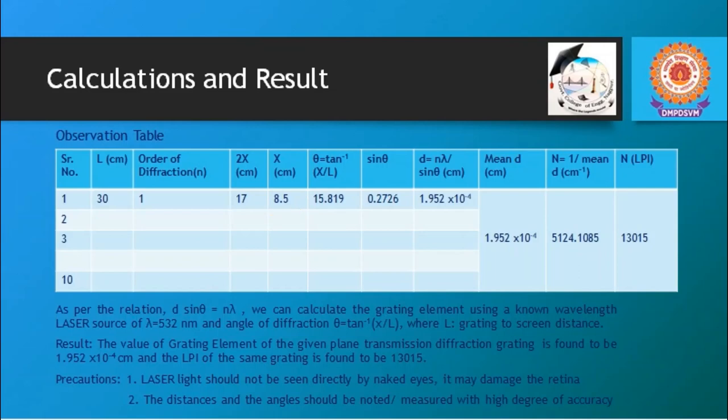By knowing the values of x and l we should calculate the tan inverse of x by l which is nothing but the angle of diffraction. That comes out to be 15.819 and hence sin θ is 0.2726. The basic relation tells us that d equals to nλ by sin θ. So d can be calculated by using these things n, λ and sin θ. And it comes to be 1.952 multiplied by 10 to the power minus 4 cm. But this is a single observation.